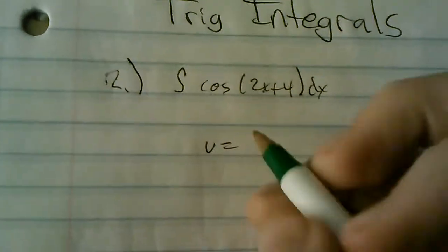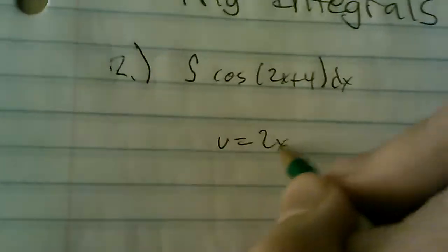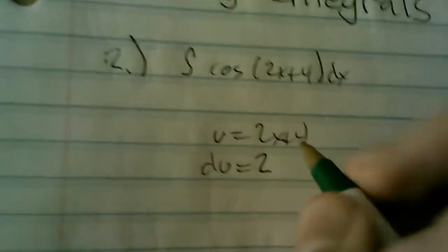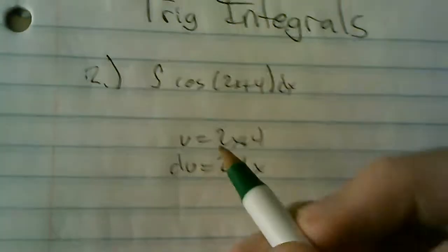So we're going to do u substitution, so u in this case is 2x+4. du equals 2. That's the derivative of this. Right there.